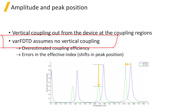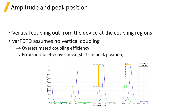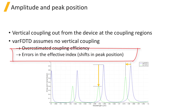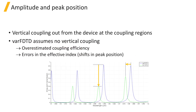The VARFDTD method assumes that there is no vertical coupling, which causes it to overestimate the coupling efficiency of the device. It also introduces some error in the effective index of the coupled mode between the straight waveguide and ring. The difference in the effective index from the 3D case can be thought of as equivalent to a small difference in the gap distance or coupling length, which causes the peaks in the spectrum to shift.